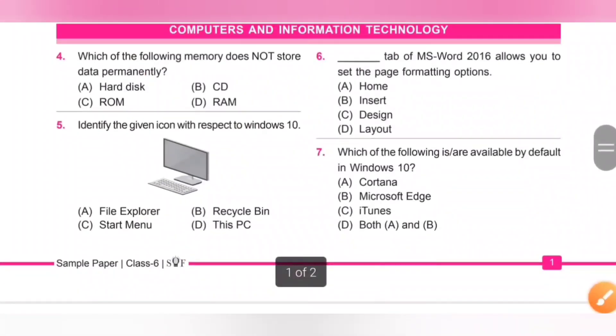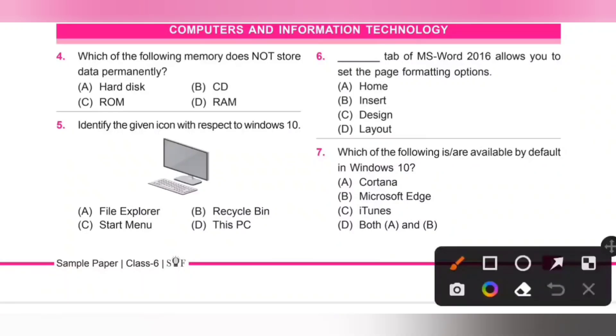Computers and Information Technology. Fourth one: Which of the following memory does not store data permanently? A. Hard disk, B. CD, C. ROM, D. RAM. We know RAM is a volatile memory. It does not store data permanently. Option D.